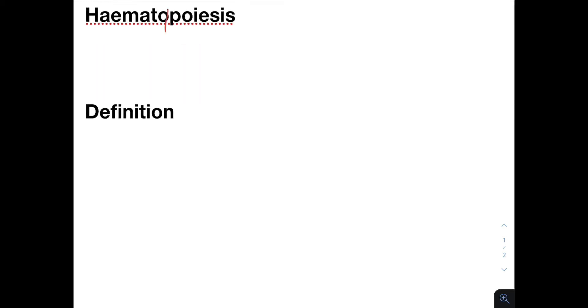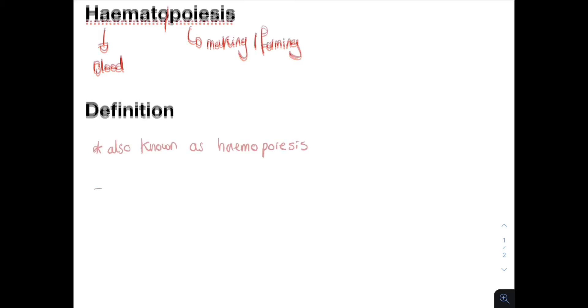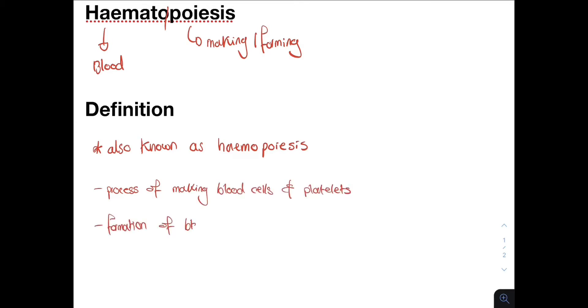So let us define this. Hemo means blood and poiesis means making or forming. It comes from the Greek word poeticos, meaning poetic. So hematopoiesis is defined as the formation of blood cells and platelets. It starts during embryonic development and occurs throughout adulthood, replacing and replenishing the blood.